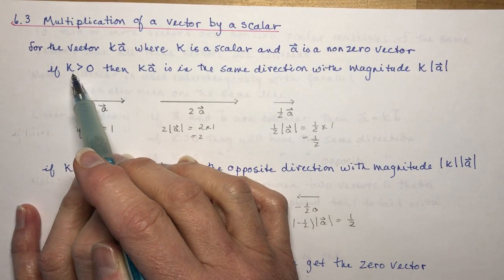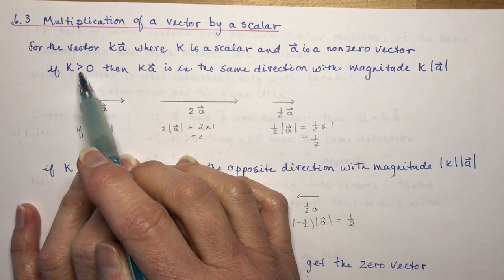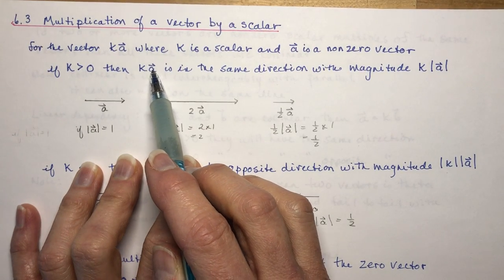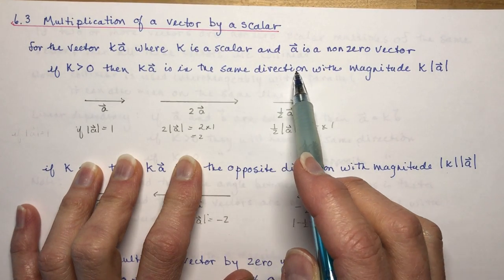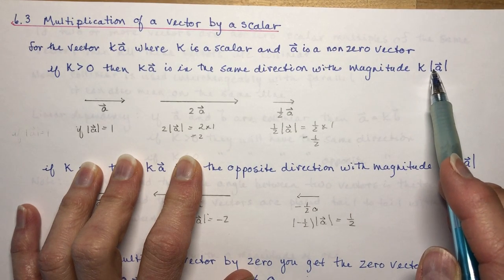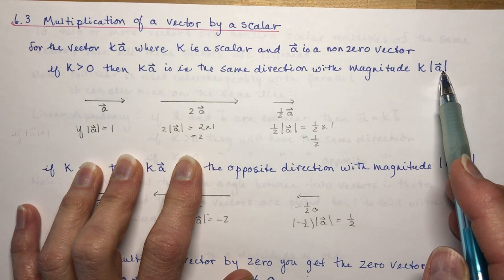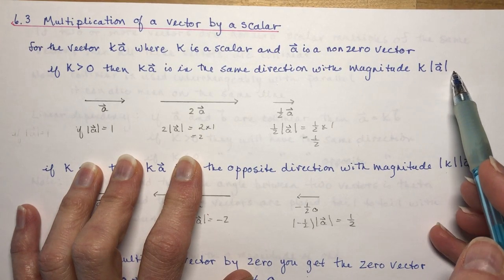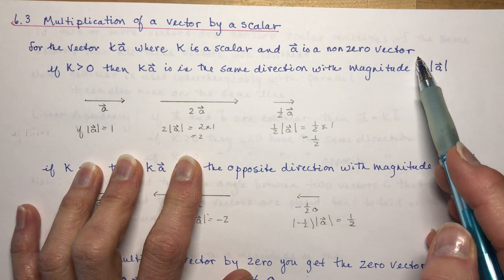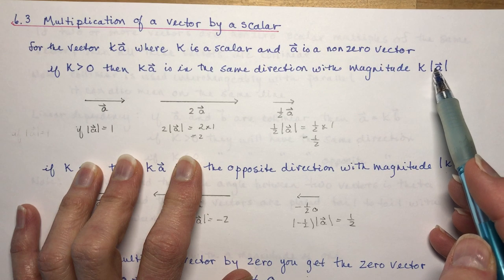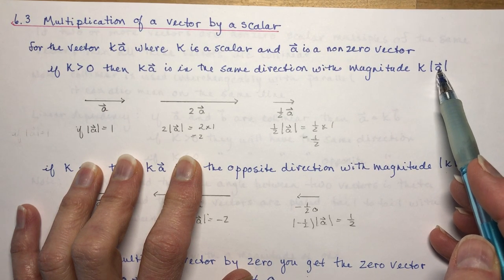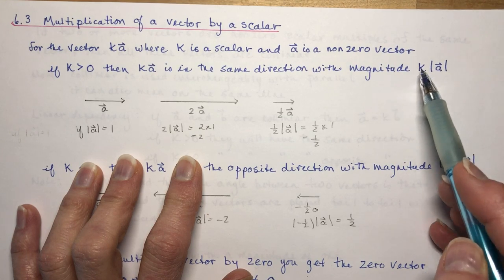If K is greater than zero — so you're multiplying by 2, 3, or a fraction — then K times vector A is in the same direction with a magnitude of K times the magnitude of vector A. When we multiply this out, we have a scalar quantity, because the magnitude of a vector is no longer a vector — it's a length, a magnitude. So be careful with that.